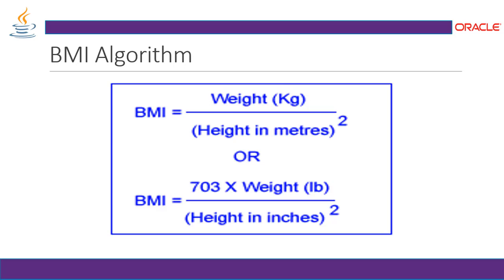This is the algorithm. BMI is calculated as your weight in kilograms divided by the square of your height in meters. Or you can calculate BMI as 703 multiplied by weight in pounds divided by the square of height in inches. This is the formula to calculate your BMI.